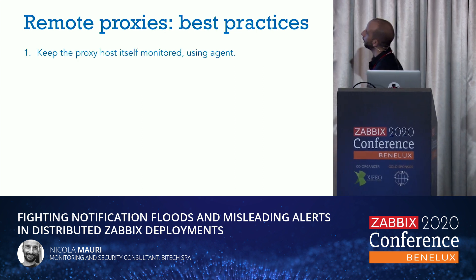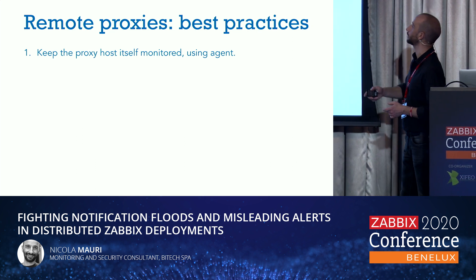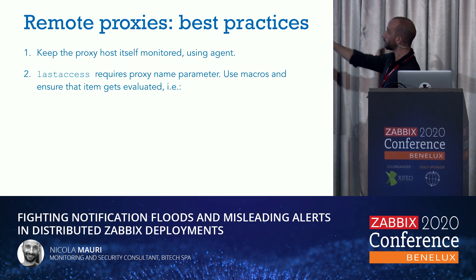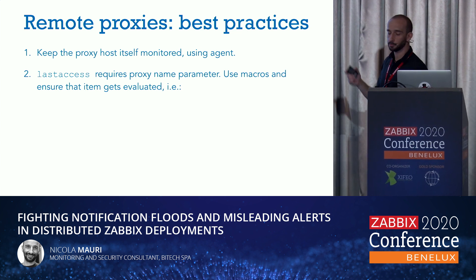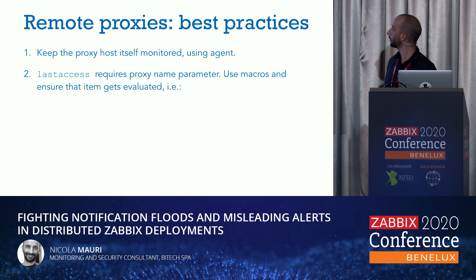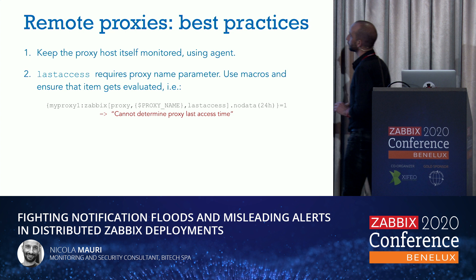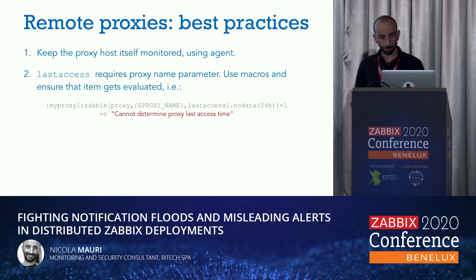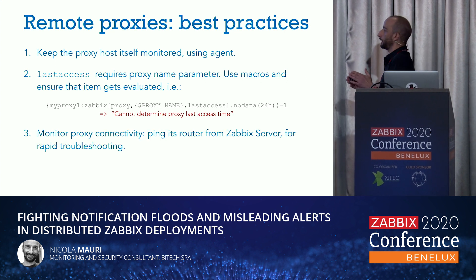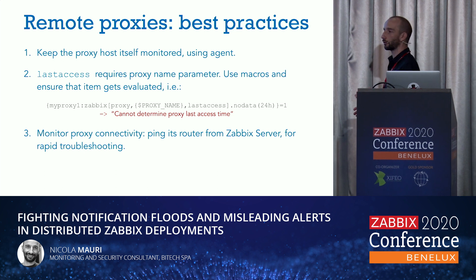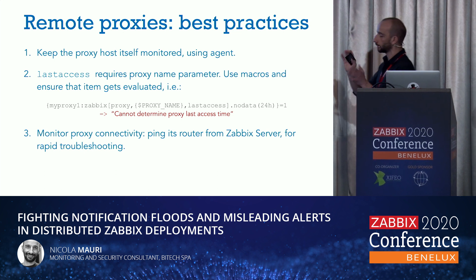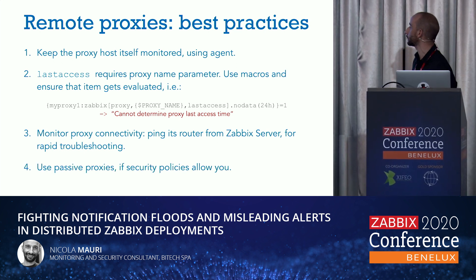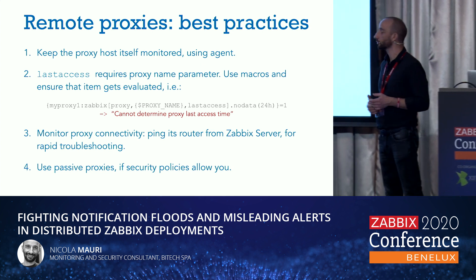Always remember to follow best practices. Don't forget to keep the proxy itself monitored with a Zabbix agent. Remember that the last-access item requires the proxy name — I recommend using a macro here and making sure the item is evaluated correctly. Also, monitor proxy connectivity by pinging its router or firewall from the Zabbix server, so you can determine if it's a connectivity issue or something else. And if your CSO allows you, use passive proxies.